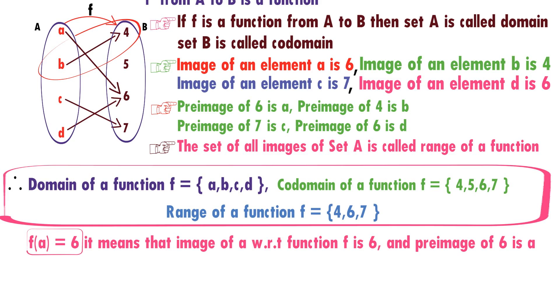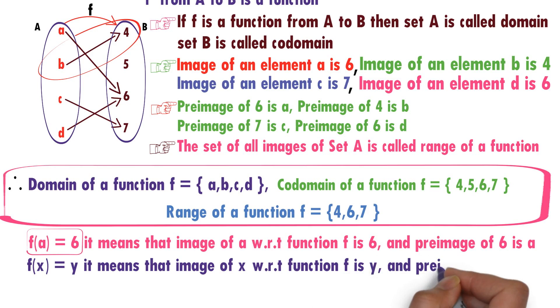Now, you see this: F of x equals y. It means that image of x with respect to F is y, and preimage of y is x.